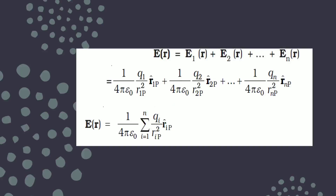The total electric field is found by taking the vector sum of E₁, E₂, E₃ and so on. In terms of unit vectors, the expression is a summation where i varies from 1 to n. This is the expression for electric field due to n charges. It is a vector quantity, and the direction of the resultant vector gives the direction of the electric field at any point due to n charges.